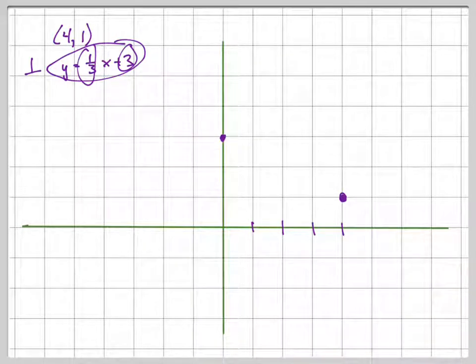The slope gives you a road map to the next point. The road map says to go up 1, that's the 1 on top, and over 3 - rise over run. So your next point would be right there. That line would look like this.